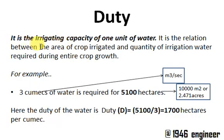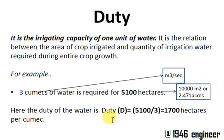Duty is the irrigation capacity of one unit of water. For example, three cumecs of water is required for 5100 hectares of land during the entire crop growth. Here the duty of the water is 5100 divided by 3, which is 1700 hectares. So the duty of one cumec of water is 1700 hectares.